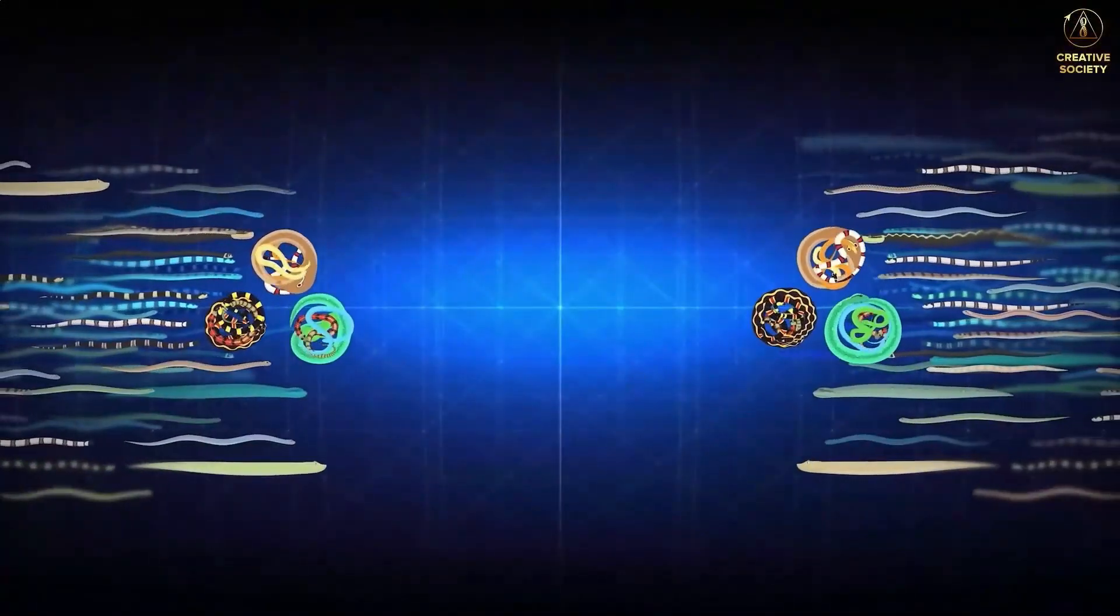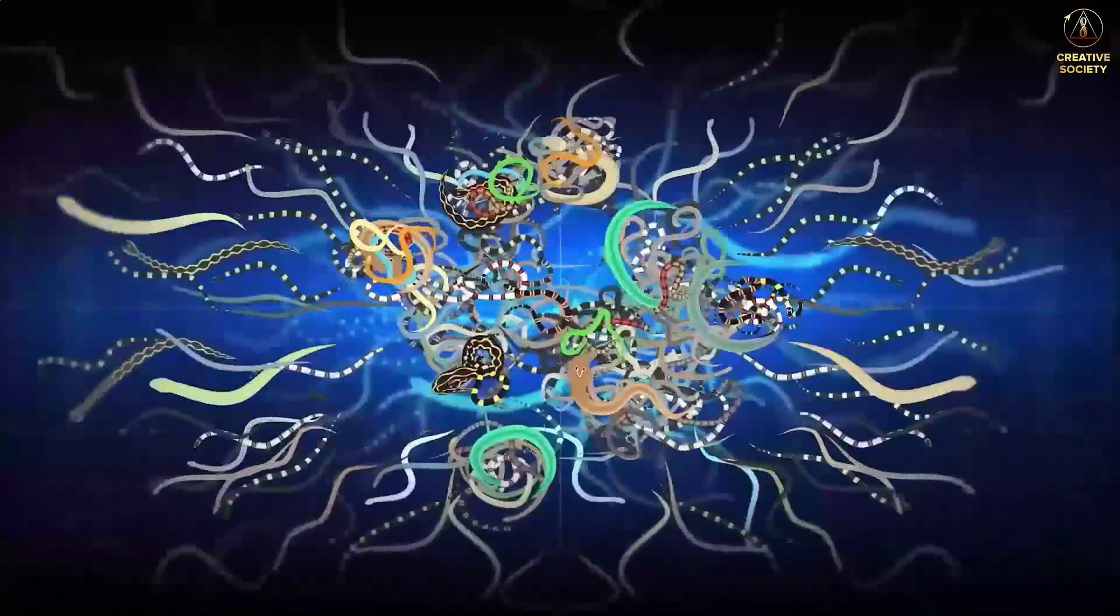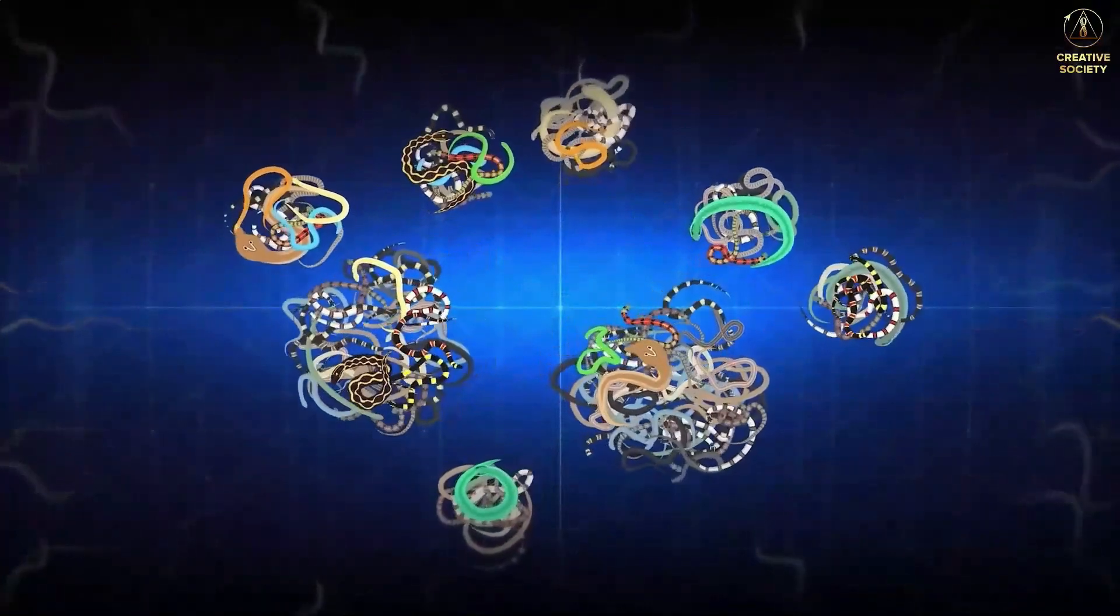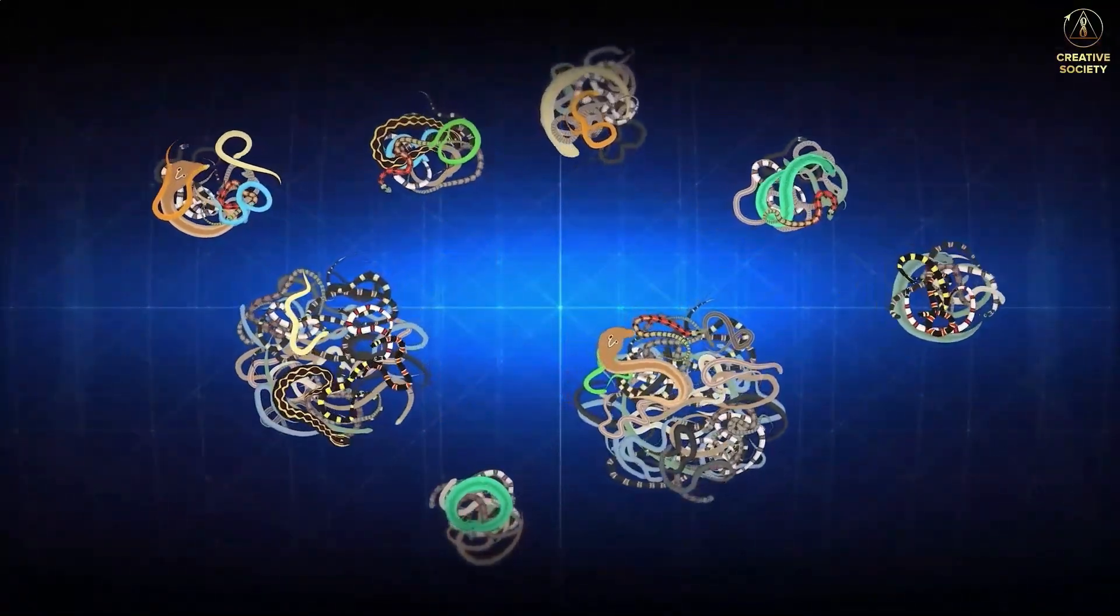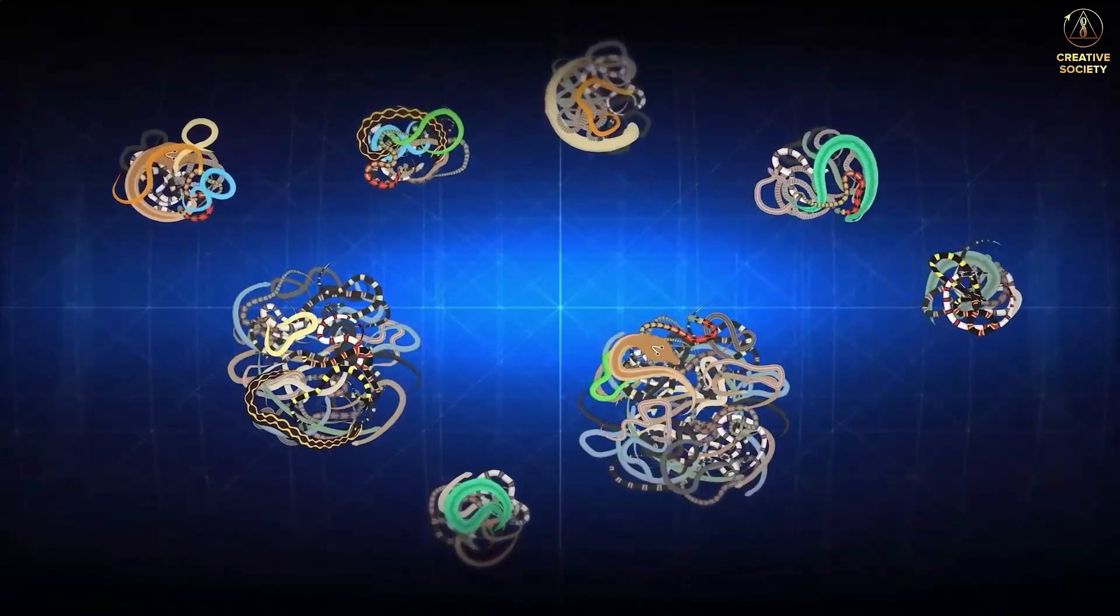Thus, not only two particles collide in the collider, but billions and billions of snakes in the state of waves, which are transformed into coil state during the collision. These coil states are precisely what we capture as a bunch of scattering particles.